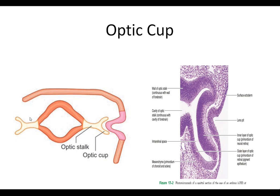On one side, the prolongation of the surface ectoderm is shown. As mentioned earlier, on top of the entire neural tube is the surface ectoderm, and the surface ectoderm is also present on the sides. The part of the surface ectoderm present on the sides will give rise to other ocular structures, as is evident in this diagram. So we now have the optic cup attached to the neural tube with the help of the optic stalk.